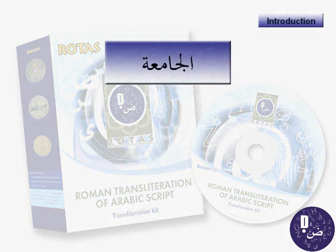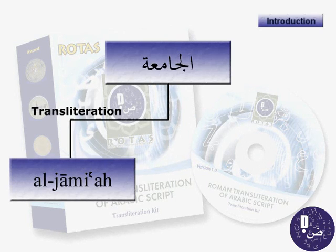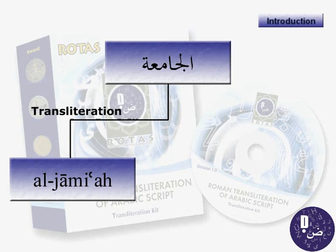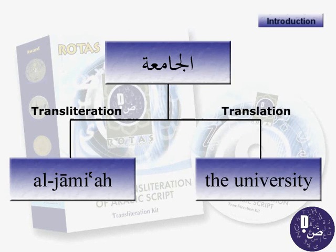Rotas is about transliteration, which is the act or product of representing or spelling words, letters or characters of one language in the corresponding letters or characters of another language or alphabet — and not translation, which is the act of rendering or interpreting the meaning of a text from one language into another.